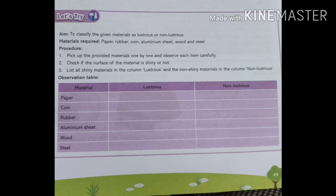Here is an activity: classify the given materials as lustrous or non-lustrous. The materials given are paper, rubber, coin, aluminium sheet, wood, and steel. Lustrous means shiny; non-lustrous means they do not shine. Let's see which are lustrous and which are non-lustrous.